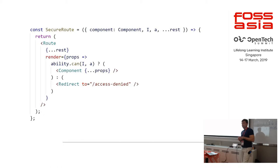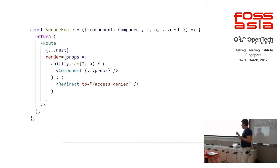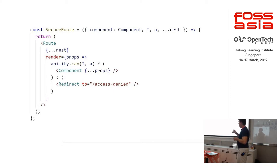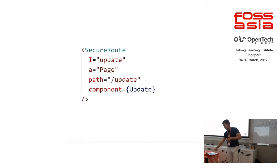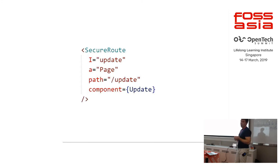Another problem with React — and with any SPA — is that we use client-side routing, meaning we manage all the URLs in the browser. In the case of React, the go-to solution is React Router. But React Router doesn't support authorization features out of the box. This is code showing how you can wrap your router with CASL and check your permissions. After that, your routing will look like this: if I can update a page, then I can go to the update URL; otherwise the user will be directed to the login page or an access denied page.